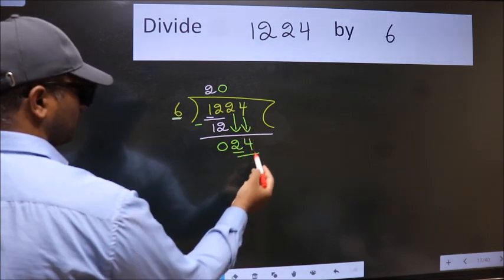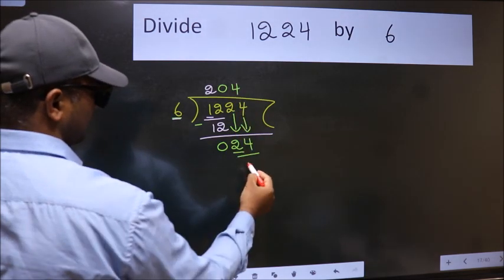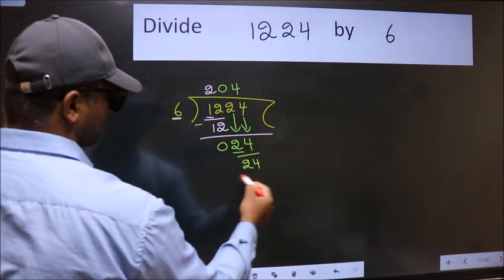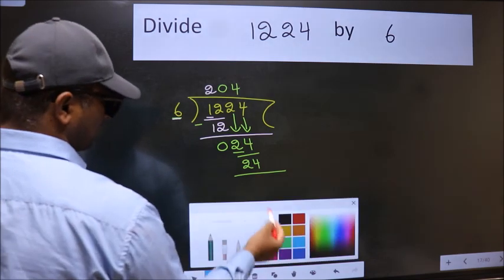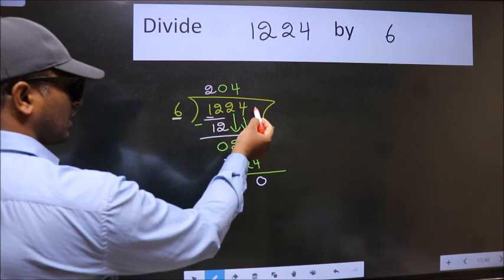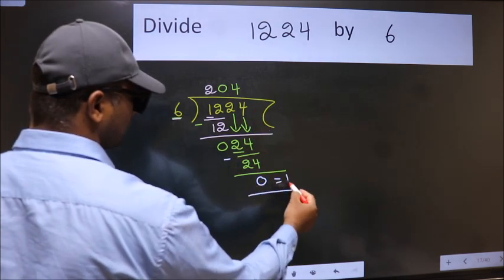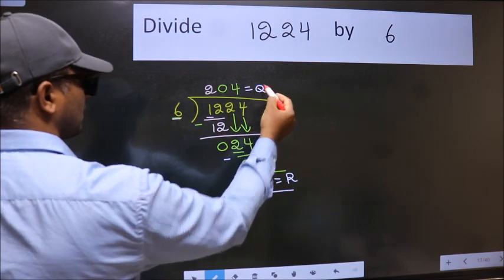So, 24. When do we get 24 in 6 table? 6 fours, 24. Now we subtract. We get 0. No more numbers to bring it down, so we stop here. This is our remainder and this is our quotient.